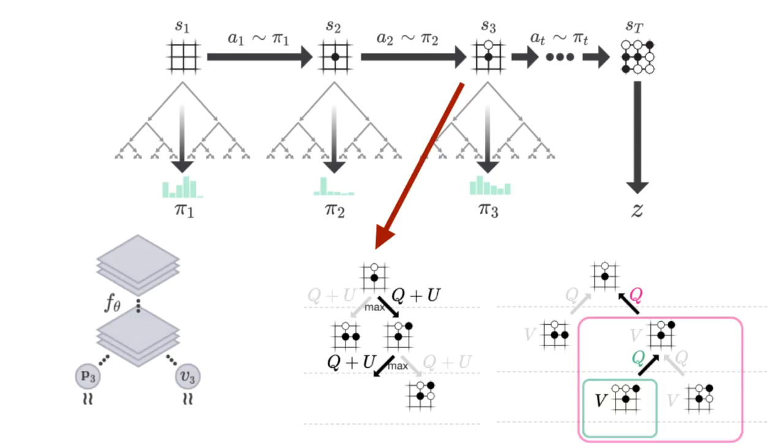Now, the weights of the neural network are updated such that its predicted move probabilities P more closely align with MCTS's move probabilities Pi. Also, the neural network's outcome predicted winner for the current state V should closely map to the outcome predicted by Monte Carlo tree search, which is Z.